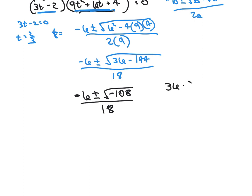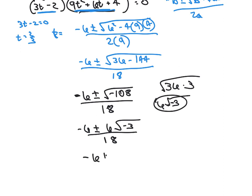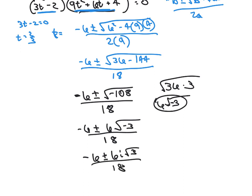So 36 minus 144 is negative 108. And that is over 18. So if I look at 108, I know that 36 times 3 is 108. I can take the square root of 36 and get 6. So 6 square root of 3 is the square root of 108. But I've got this minus sign in there. So let's go ahead and write this. So I'm gonna pull that minus sign out of there and put an I. And then my 3 becomes positive over 18.